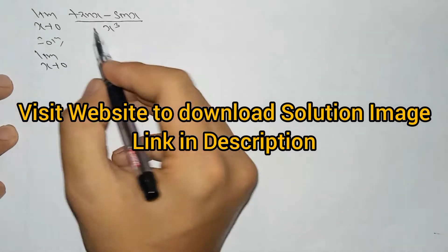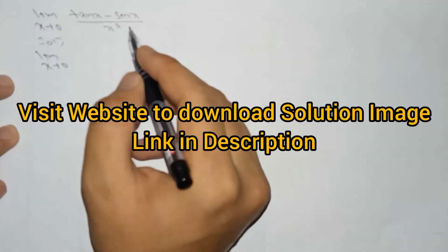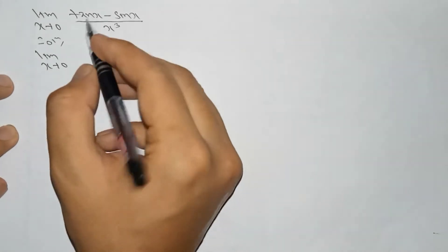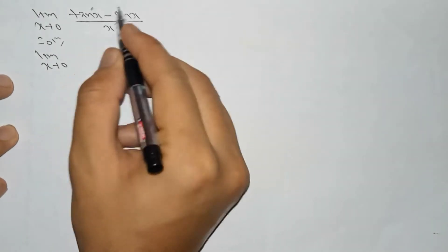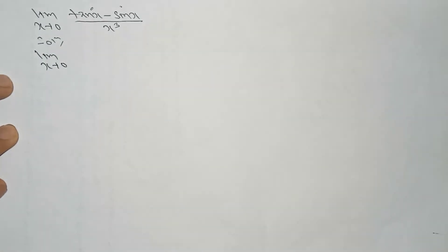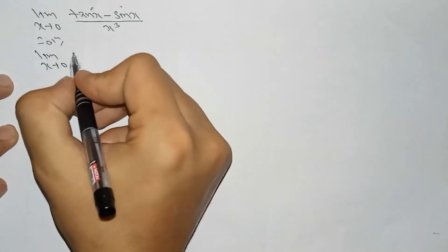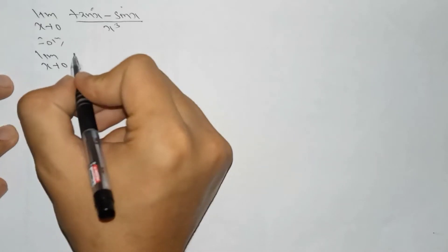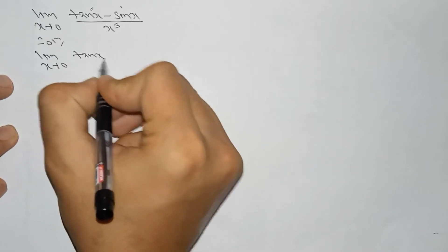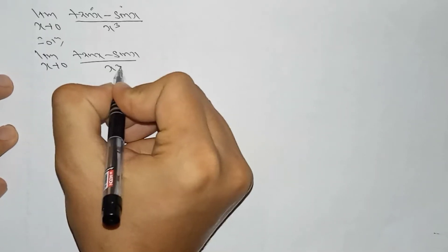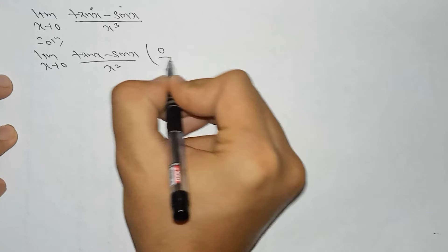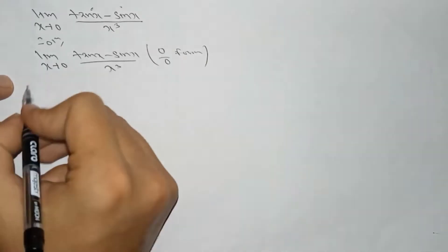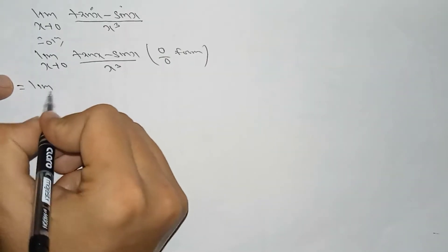Limit x tends to 0. As you can see, this term is in the form of 0 by 0. If we put 0 here, it becomes 0 by 0 form. So we write this question as it is: tan x minus sin x by x cube. It is in the 0 by 0 form.